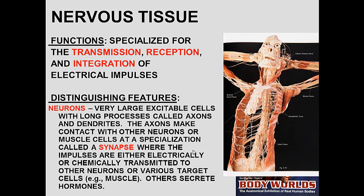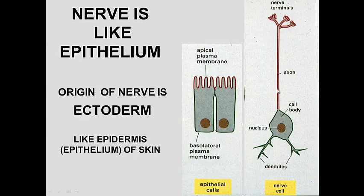Distinguishing features of nerves: neurons, which are the nerve cell body plus axon, are very long excitable cells, and they communicate with other neurons or other target cells by synapses. So you have chemical signals sent from one cell to another to ignite that cell or maybe secrete hormones. Nerve cells are very similar to epithelium in that both come from the ectoderm. We have a base in the epithelium and a kind of base in the nerve cell, and apex and apex.